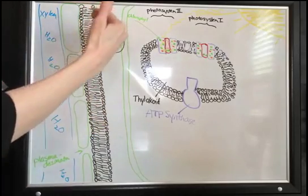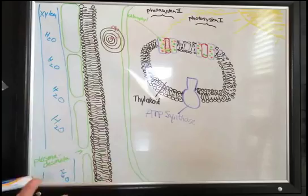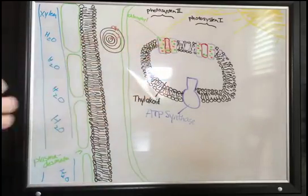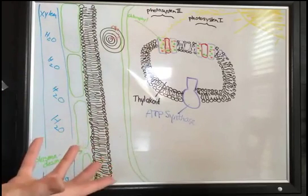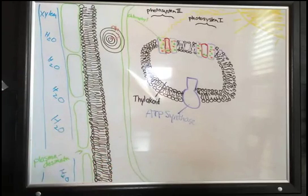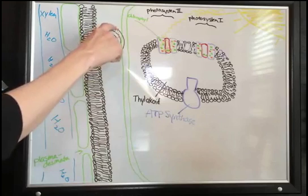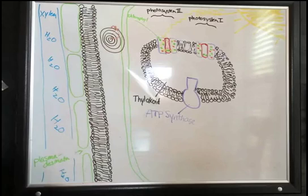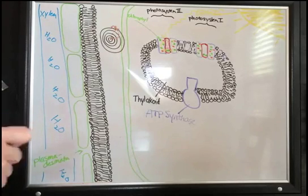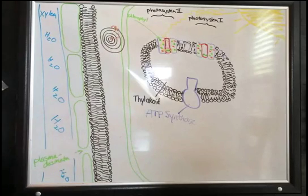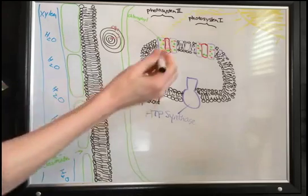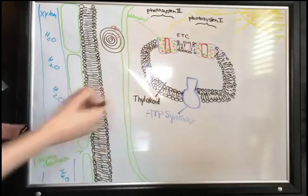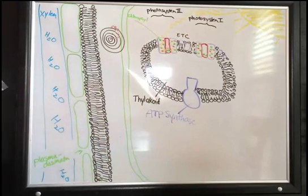Instead of letting them fall back down and glow — and you can actually isolate chlorophyll molecules, shine sunlight on them, and they glow red in the dark — we're not going to let them glow. We're going to capture them and take them down one step at a time by passing them from protein to protein. We've seen this before — it's called an electron transport chain. Plants have one too, right there, just like ours. I'll abbreviate it ETC — electron transport chain.